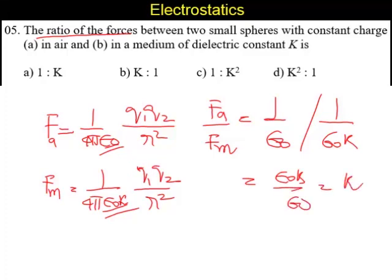K is the answer or K is to 1 is the answer. So answer is B. K is to 1 is the answer.